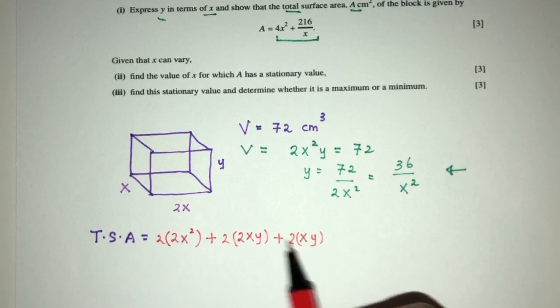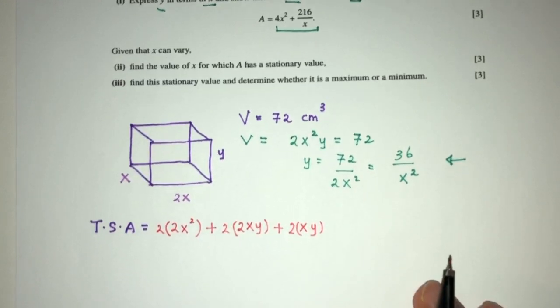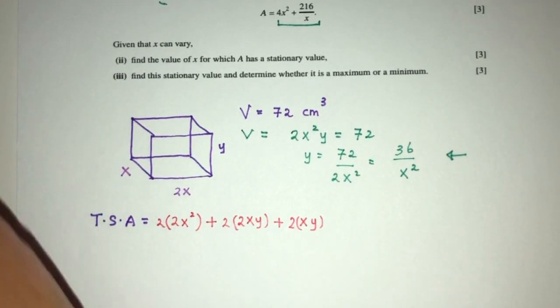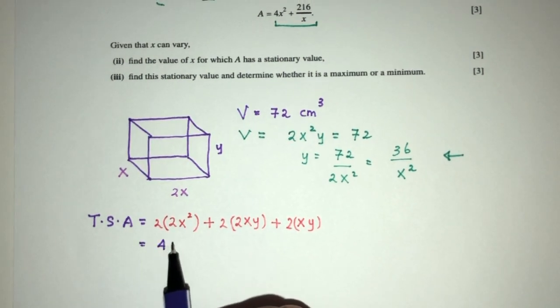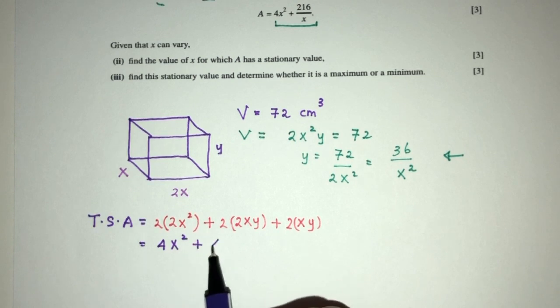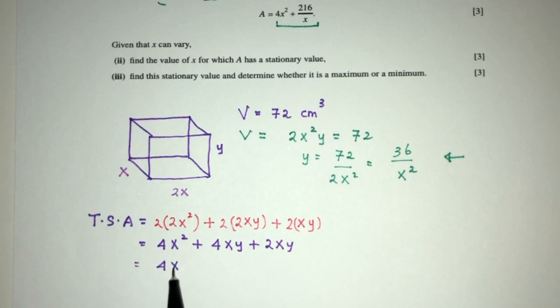And then we have this area right here will be x times height will be xy, and then times 2 again because we have this side and this side. So in total we have 6 faces which will add up to form the TSA of this shape. Now simplify, you will have 4x squared plus 4xy and plus 2xy, which is 4x squared plus 6xy.